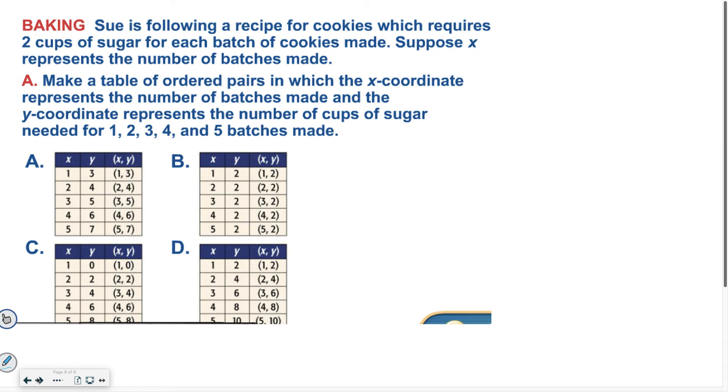All right. Hopefully for this one, when you looked at letter A, you said, okay, for one batch of cookies, it says that she needs three cups of sugar. That doesn't match what the story problem said. So then you look at letter B. For one batch of cookies, you need two cups of sugar. That's correct so far. But then for two batches of cookies, it says you still only need two cups of sugar. That's not right. Then over here, for one batch of cookies, it says zero cups of sugar. However, I would not want to eat those cookies. So that means letter D must be right. For one batch of cookies, two cups of sugar. Two batches of cookies, four cups. Three batches, six cups. That is correct.